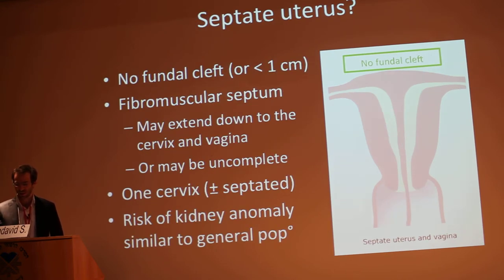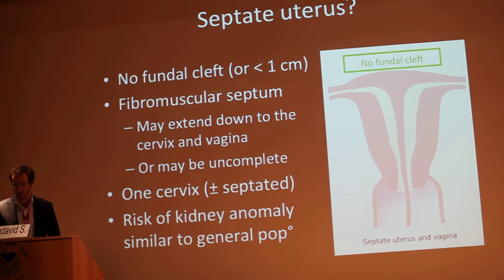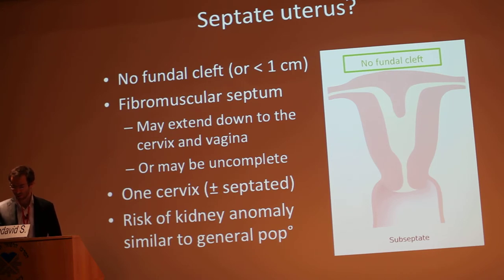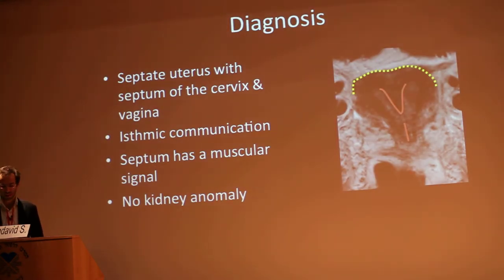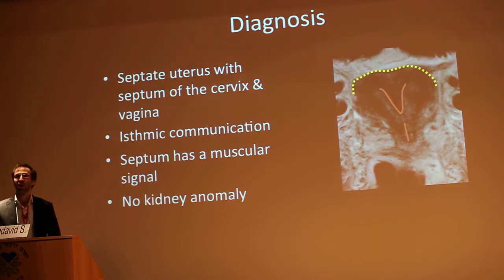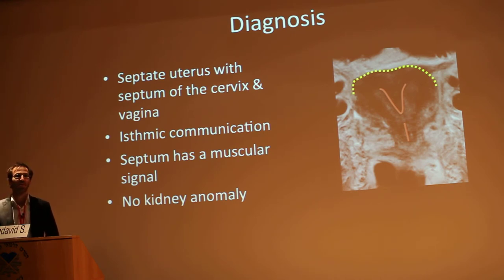Is it septate? There was no fundal cleft. The septum may extend down to the cervix and the myometrium, as it is in this case, or it may be incomplete. There is only one cervix, and the risk of kidney anomaly is similar to the risk in the general population. So in this case, the diagnosis was a septate uterus with septum of the cervix and myometrium, isthmic communication — which is explained by the fact that the septum starts to resorb in the isthmic region — and the absence of kidney anomaly.